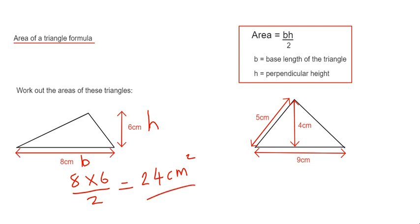So let's have a look at the second example here. This time we have a base of 9. And we need to be careful here because the 4 is our perpendicular height, that's our vertical height. The 5 you don't have to use, that's just there to catch you out, so let's cross that number out.